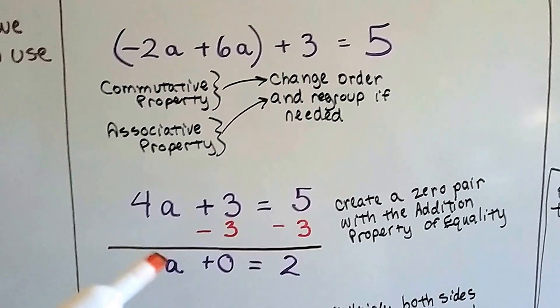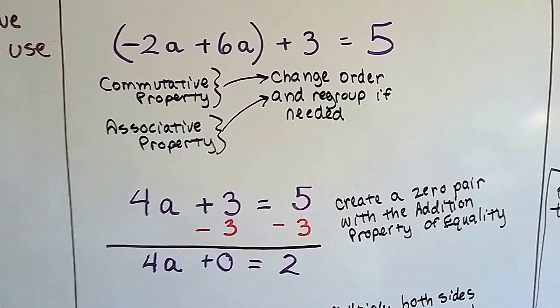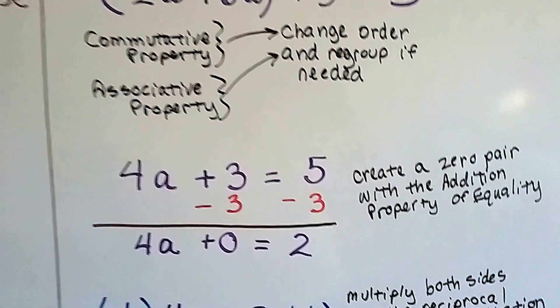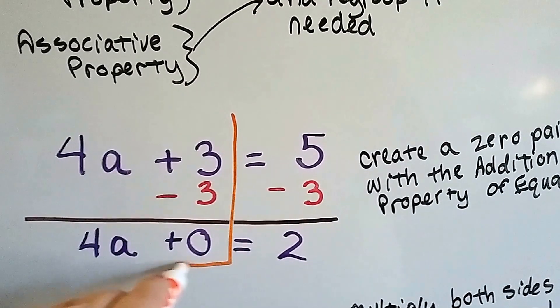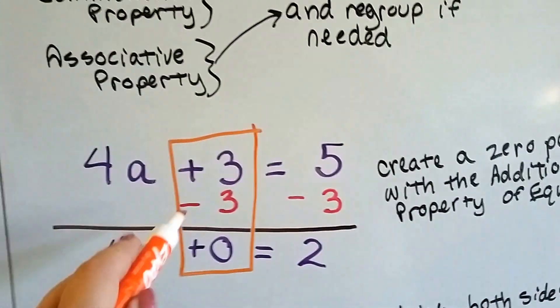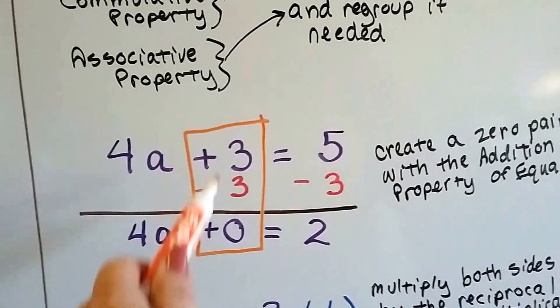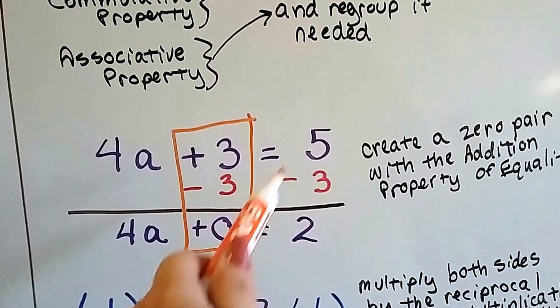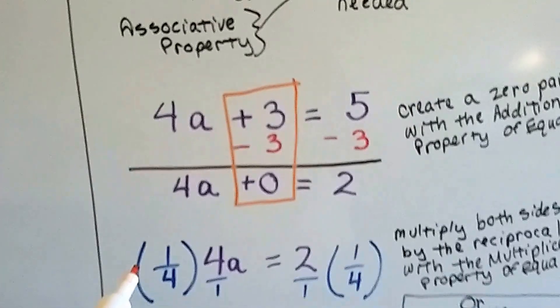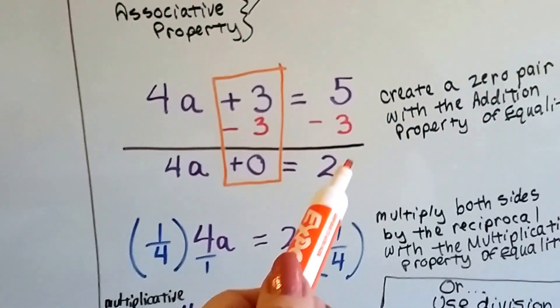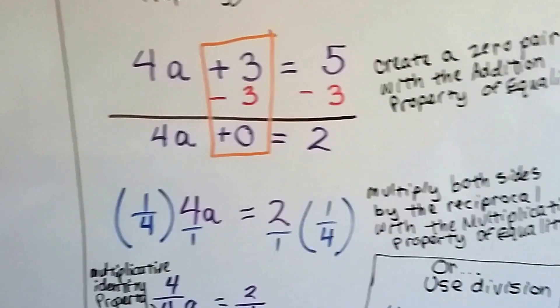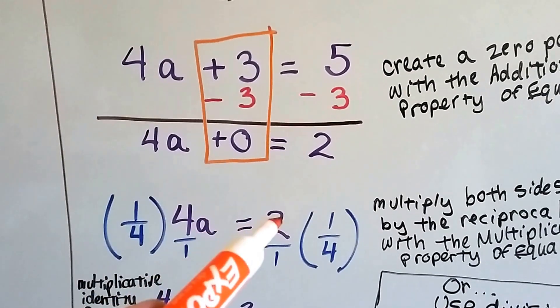Now what we can do is create a zero pair with the addition property of equality. And by adding a negative 3 to both sides of the equation, we create a zero here. Plus 3 minus 3 is zero. And 5 minus 3 is 2. Now we have 4a equals 2, because we don't need to write that zero. 4a equals 2.